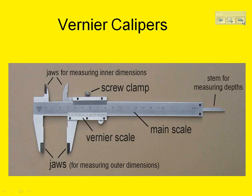We use vernier calipers in class. To use vernier calipers, first let's look at the main parts. We use them for precisely measuring the length or width of an item. We're usually using these lower jaws. You could also measure the inside of a cylinder or a pipe.